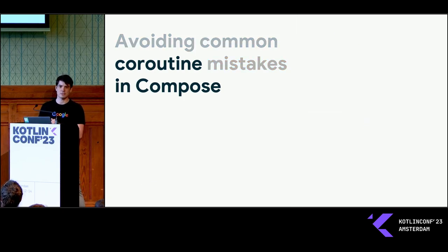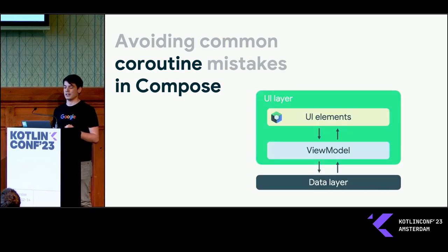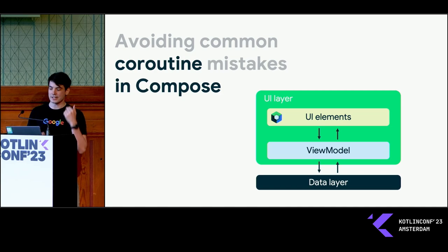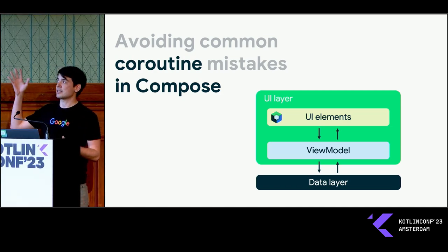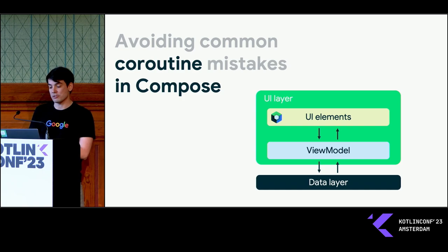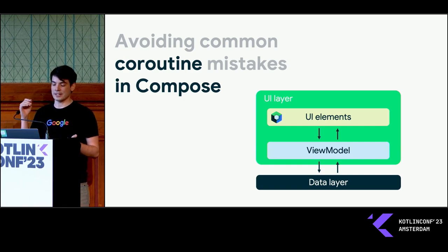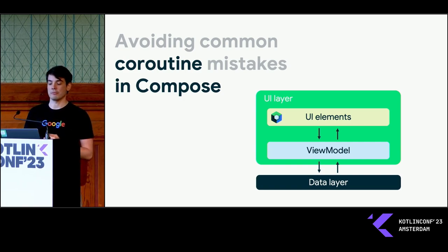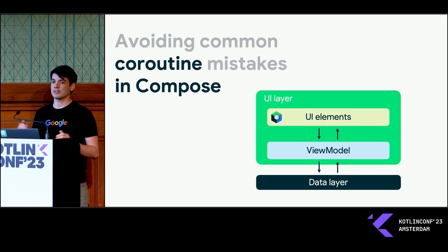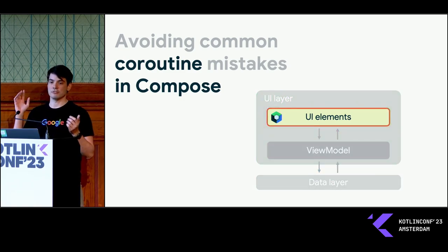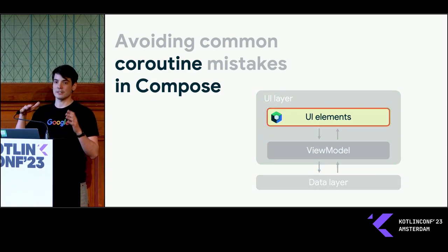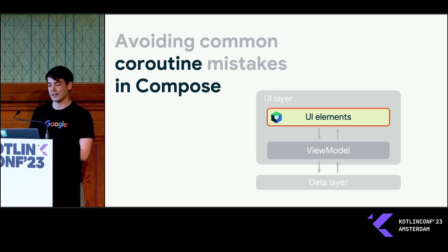First things first, what do I mean by coroutines in Compose? Here's what a typical Android UI layer might look like. We have the UI elements on top, which in our case is going to be Compose code. Then that's talking to something like a ViewModel or other state-holder controller object. And then that's communicating further down to lower layers where we're actually grabbing data from. While all of this can be powered with coroutines, I want to focus on the topmost layer here — coroutines that are started within composable code, mostly calling into the various suspending APIs available in Compose.